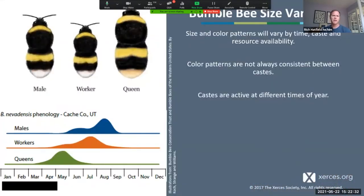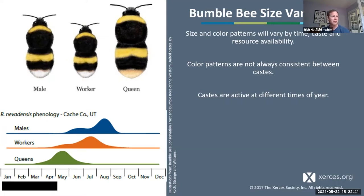An important thing to consider as you get started is that, as we've talked about from their life cycle, there are different castes of bumblebees — there are males, there are workers, and there are queens. All of these are out on the landscape at different times of year. All of these castes often look different from each other as well. Workers and queens almost always look different than males, and sometimes workers look different than queens. This can make identification quite challenging.